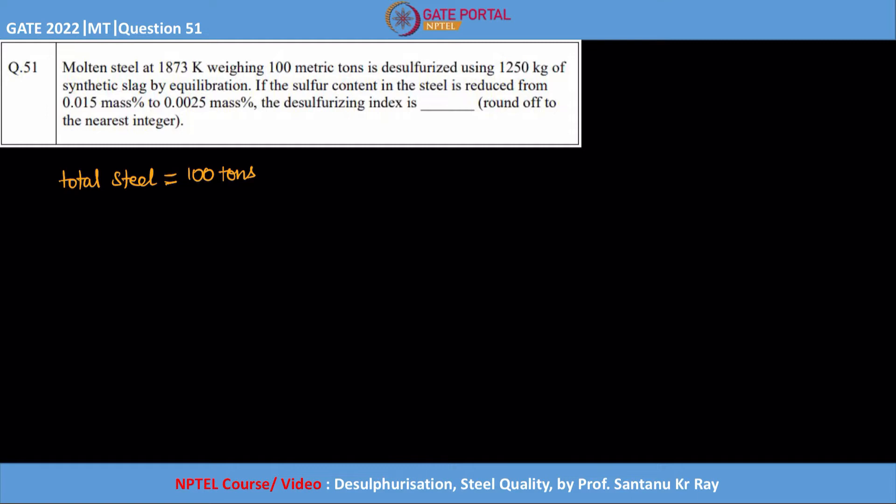What is the slag weight? The slag weight is 1250 kg. Now they are telling that using this slag, it is used for desulfurization, it is used to reduce the sulfur content. So sulfur is reduced from initially 0.015 percentage to 0.0025 percentage. This is initial and this is final.